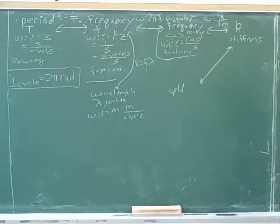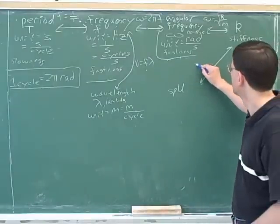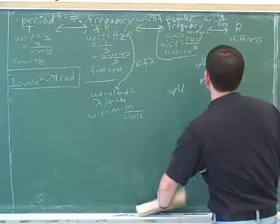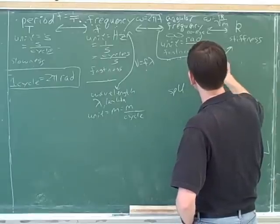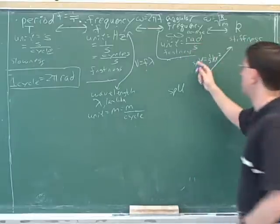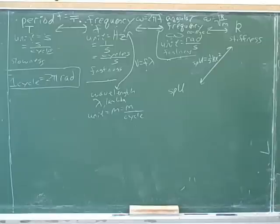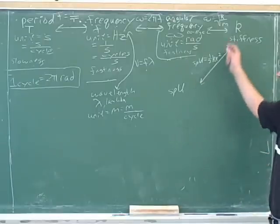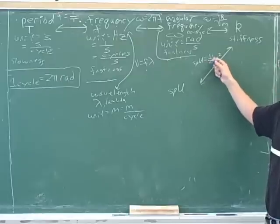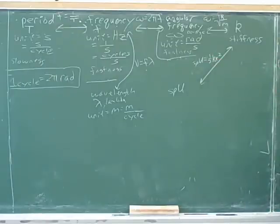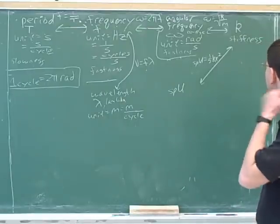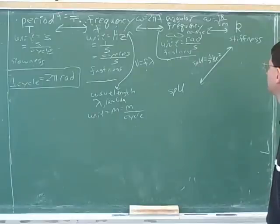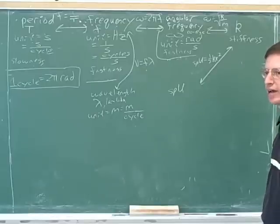Let's add this to our flowchart. The spring energy — spring U — is one-half kx squared. We keep writing the concepts on the sides of the arrows and the formulas above the arrows; they show us how to get between those concepts. So if we know k, we can figure out the spring energy. That's certainly a formula you might need to use to go back and forth between those.